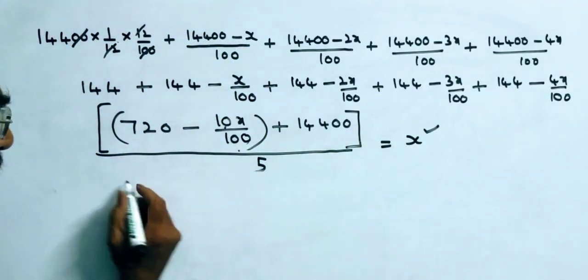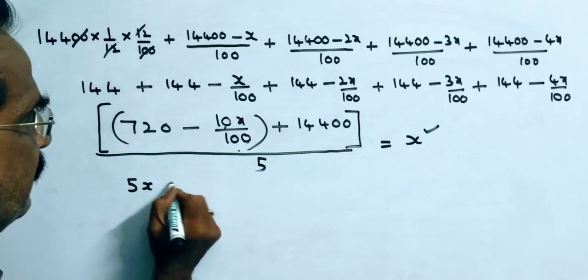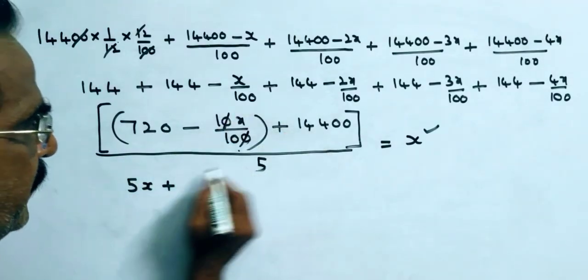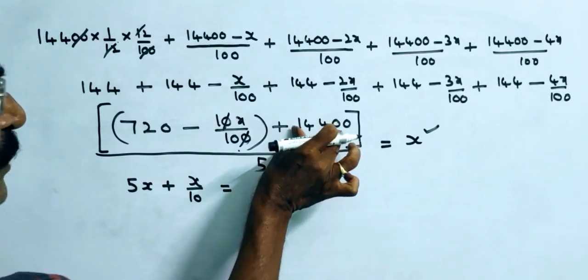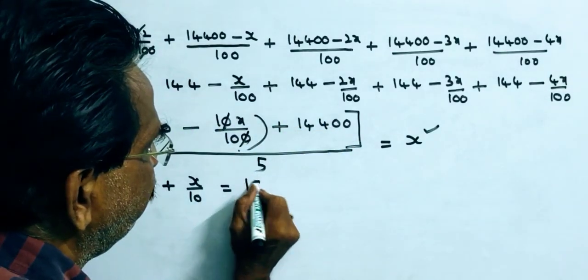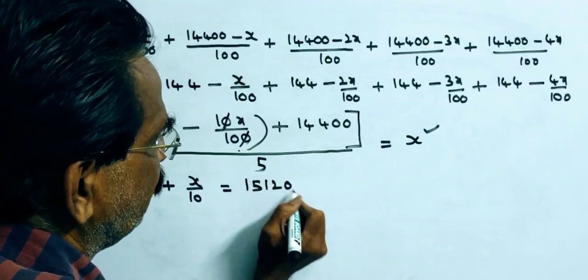It implies 5x plus x/10 equals 14,400... which gives us 15,200.